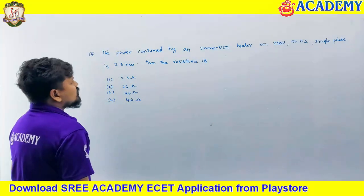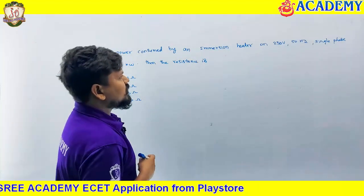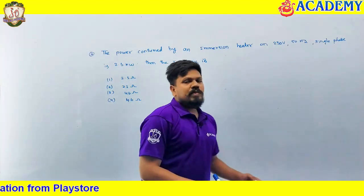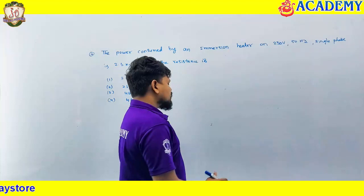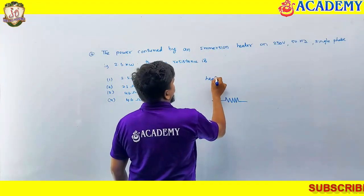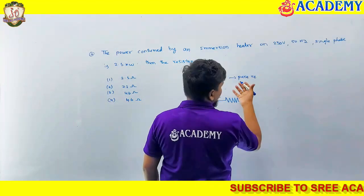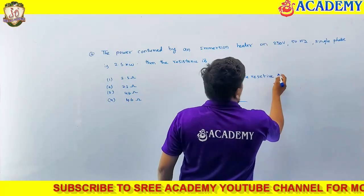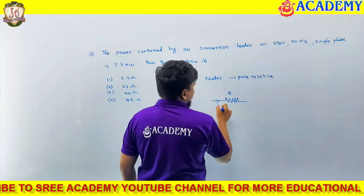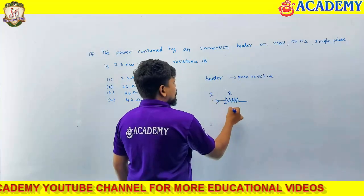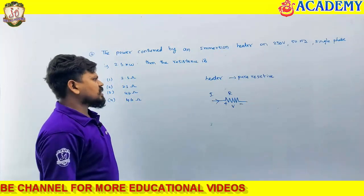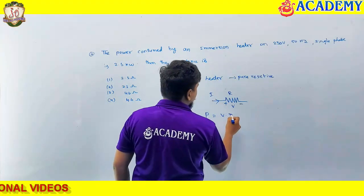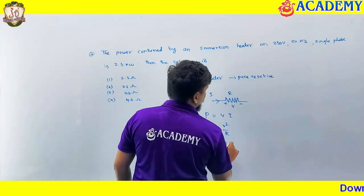Next question: the power consumed by an immersion heater on 230 volt, 50 hertz single phase is 2.3 kilowatts. Then the resistance is? Immersion heater means it is a pure resistive load. Heater is nothing but a pure resistive load. For a resistor, power can be written as voltage into current, V squared by R, or I squared into R. They have given voltage and power, and are asking resistance.